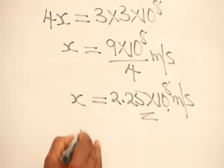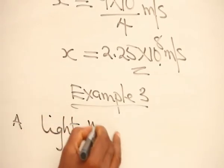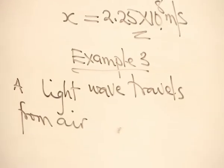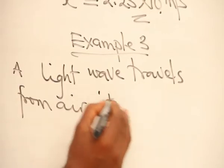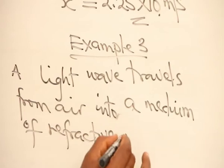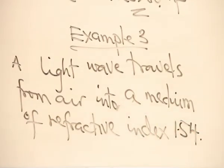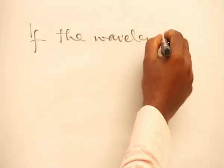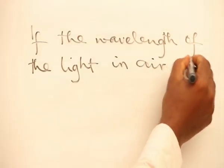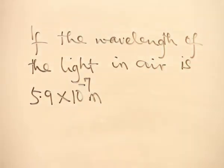Example 3. A light wave travels from air into a medium of refractive index 1.54. If the wavelength of the light in air is 5.9 times 10 raised to power minus 7 meters, calculate its wavelength in the medium.